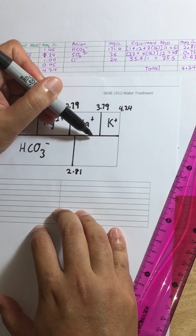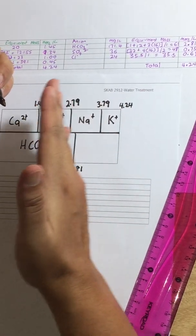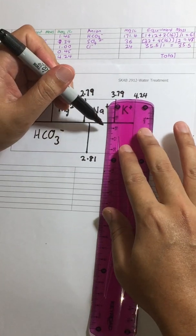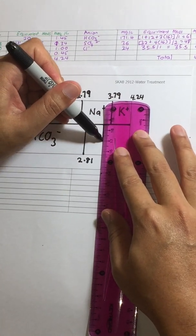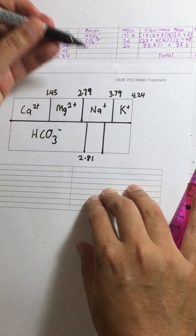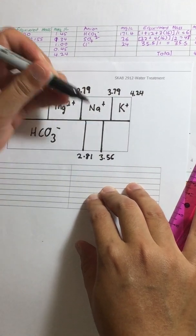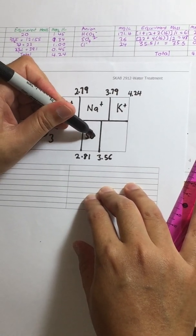So 3.56 has got to be before 3.79. So perhaps this is the correct line for that. So we will label it as 3.56, and that is for sulfate ion.